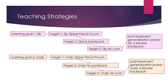For the first learning goal — to zip a zipper — we have three different targets. First, we'll teach KP to zip a zipper pencil pouch, then to zip his backpack, and the third target is his clothes. After all three targets, we'll use a different kid-sized backpack to see if KP can generalize and zip a zipper on it. The second learning goal, to unzip, also has three targets, and we'll use a kid-sized backpack for the post-treatment generalization probe.